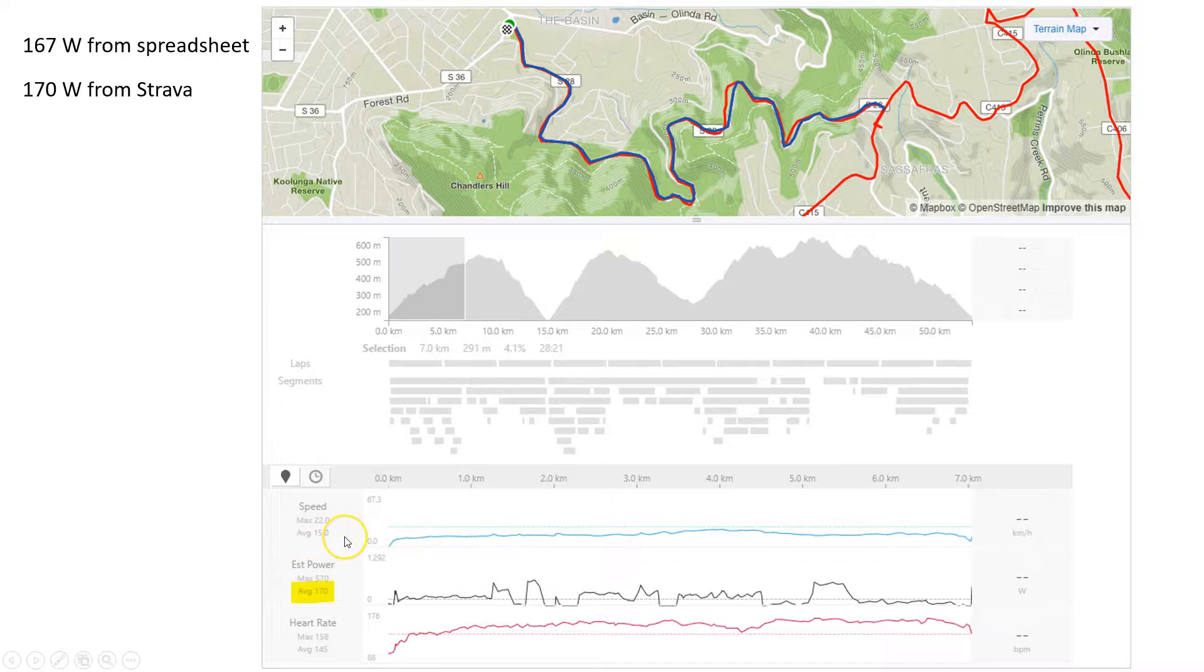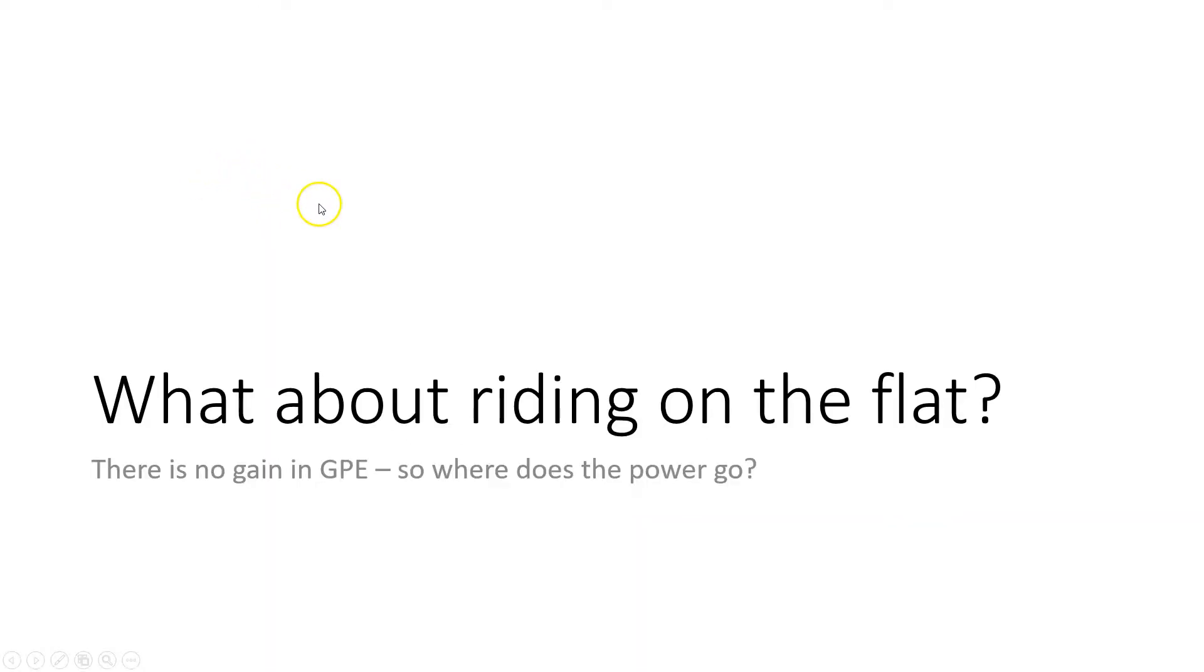but there is a small difference and that's probably due to the energy that I would have expended in traveling along at a constant speed because riding along the flat would take energy so let's do a little analysis for riding along the flat too.